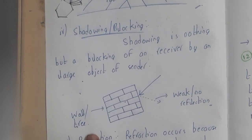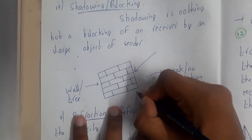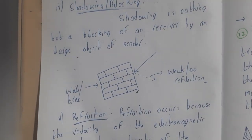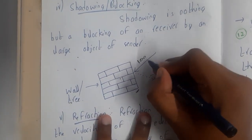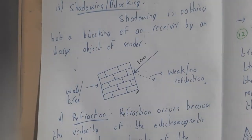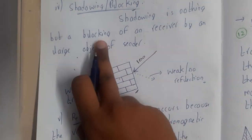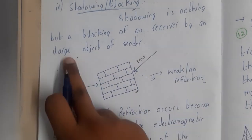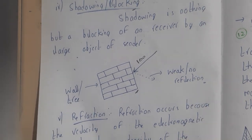The next problem is blocking or shadowing. In this scenario, something obstructing the signal — like a wall or a tree — absorbs the signal. Even if the signal power was 100, the obstacle directly absorbs the whole signal so even a weak signal is not transmitted. This is called blocking or shadowing. Shadowing is the blocking of a receiver by a large object from the sender. This obstruction can occur at the sender side, receiver side, or anywhere in between.